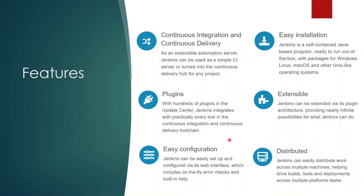Fifth, easy configuration: Jenkins can be easily set up and configured via its web interface, which includes on-the-fly error checks and built-in help. The UI is very clear and easy to navigate — you just enter the values needed for any configuration. Sixth, distributed builds: Jenkins can easily distribute work across multiple machines using a master-slave architecture, where several machines are connected to one master, enabling fast builds, tests, and deployments across multiple platforms.